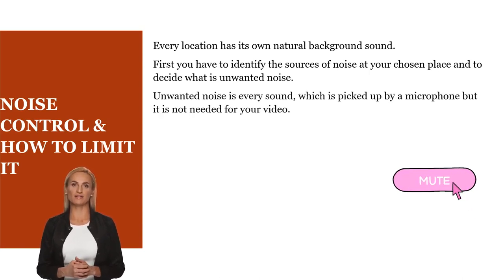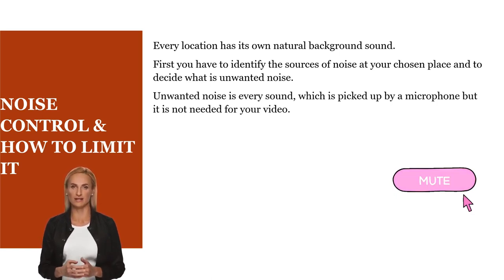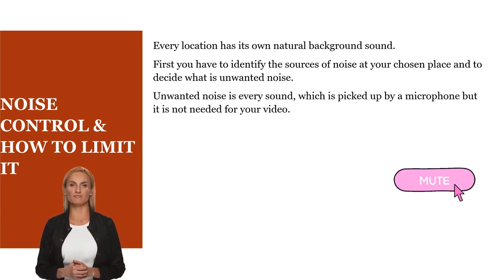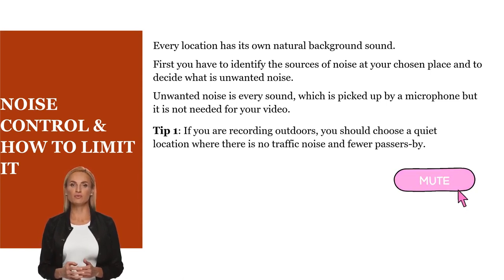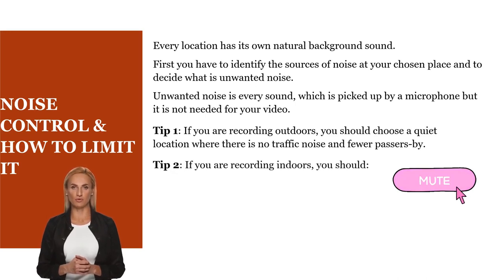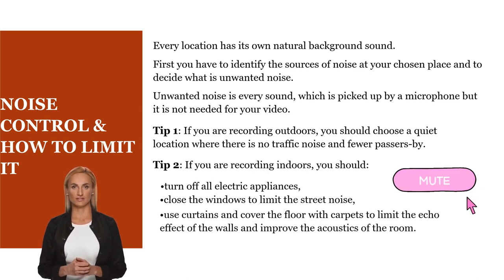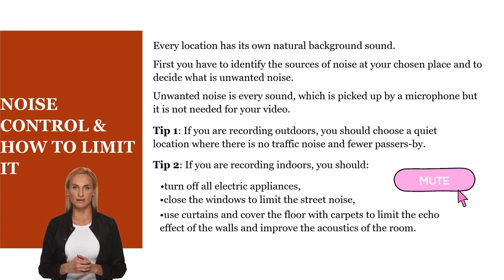Unwanted noise is every sound which is picked up by a microphone but is not needed for your video. To limit this type of noise, you should choose a space with as little unwanted noise as possible. We have two tips for limiting unwanted noise. Tip 1: if you are recording outdoors, you should choose a quiet location where there is no traffic noise and fewer passers-by. Tip 2: if you are recording indoors, you should turn off all electric appliances, close the windows to limit street noise, and use curtains and cover the floor with carpets to limit the echo effect of the walls and improve the acoustics of the room.